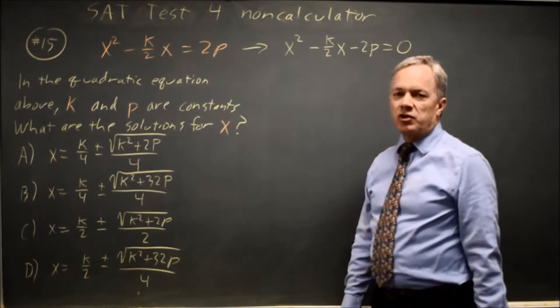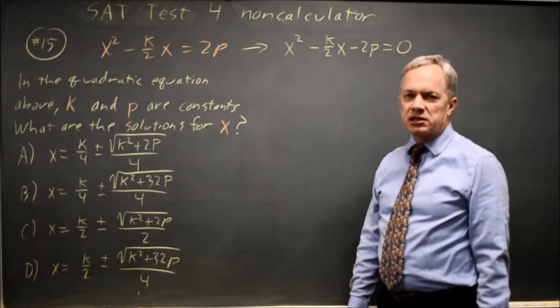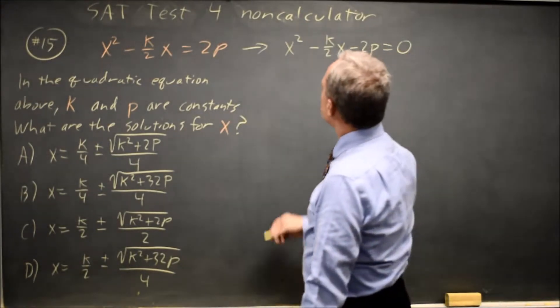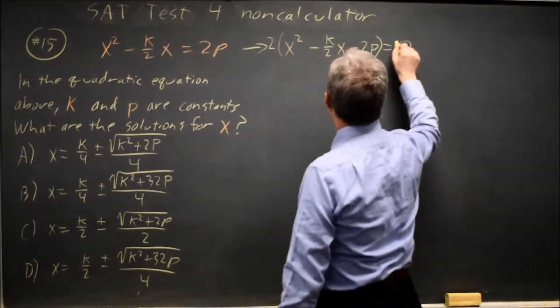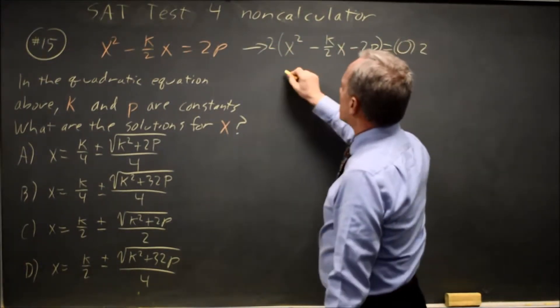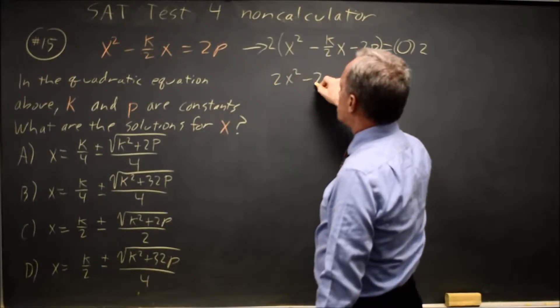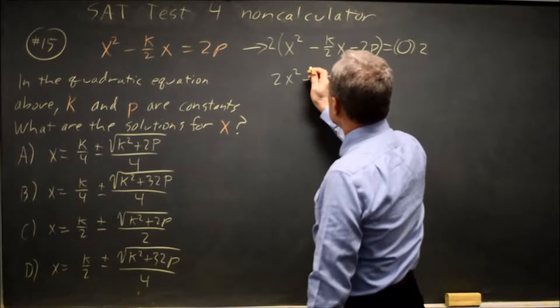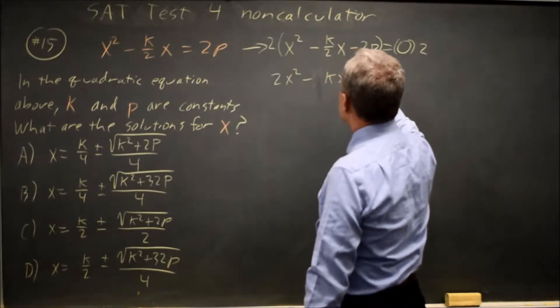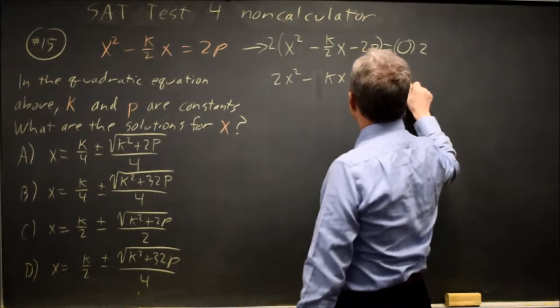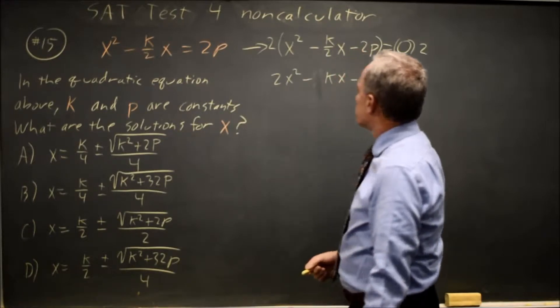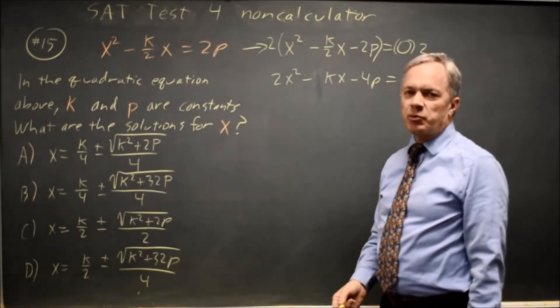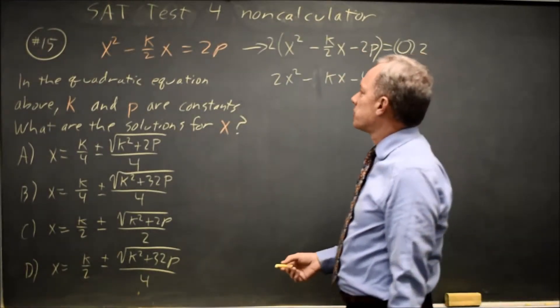And I'm not fond of fractions, especially inside the quadratic formula, so I'm going to multiply both sides by 2. That gives me 2x squared minus kx minus 4p equals 0. This will be easier to work with because I don't have fractions inside my square root.